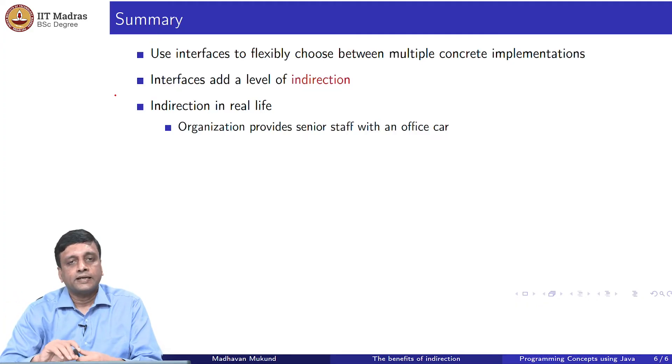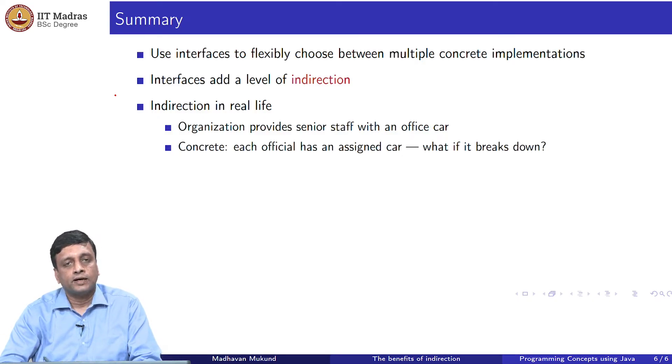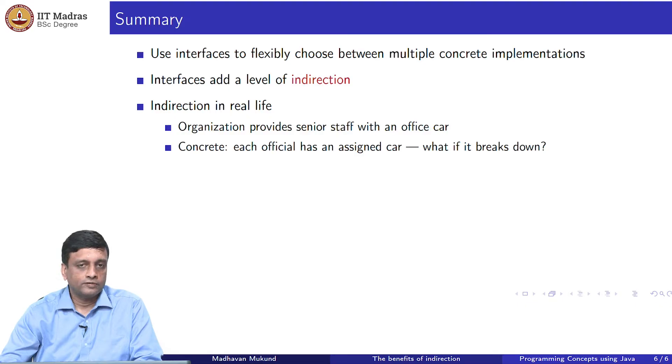Just to drive home this idea of indirection, so that you have something tangible that you can remember it by. Suppose we have an organization in which senior staff are provided with an office car. This is not unusual that people who are at a senior level in an organization are provided with transportation by their company. If I take this literally, if I take the concrete implementation view of this, then each official who has access to an office car will be assigned a car. The organization will maintain a fleet of cars and one car will be assigned to one employee who is entitled to that car. There will be, for example, the president's car, there will be the vice president's car, the director's car and so on. The problem with this concrete assignment is that each car, of course, is prone to its own problems. If a car breaks down, then that particular official is deprived of a car till the problem is resolved.